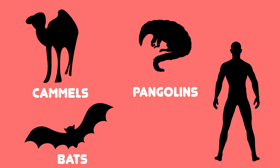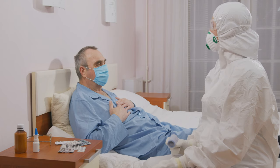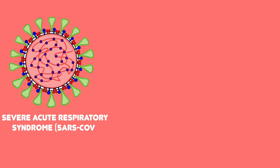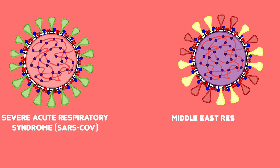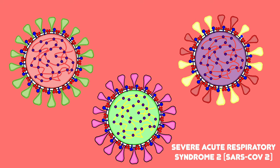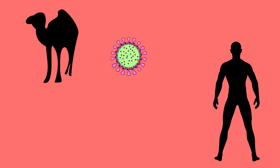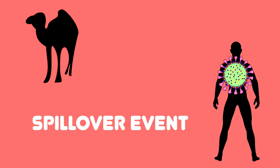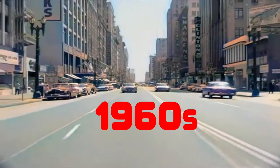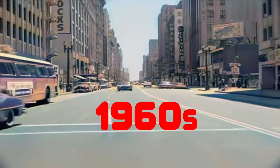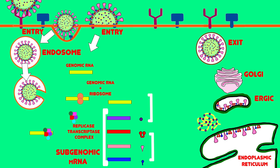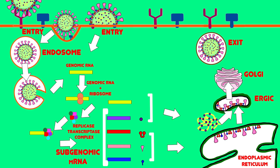Three new coronaviruses have emerged from animal reservoirs over the past two decades to cause serious and widespread illness and death. These are Severe Acute Respiratory Syndrome, Middle East Respiratory Syndrome, and recently SARS-CoV-2, known commonly as COVID-19. When these viruses jump from animals to humans, it's called a spillover event. Since the mid-1960s, humans have seen seven different coronavirus outbreaks. Let's look at the steps involved in a coronavirus infection.